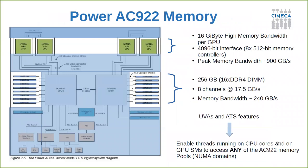Now let's discuss the memory equipment of the node. We have 256 GB of DIMM RAM distributed in 16 DIMMs — 8 per socket — with 8 channels per socket and a bandwidth per channel of 17.5 GB/s, providing the CPUs with approximately 240 GB/s of memory bandwidth.